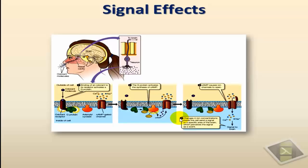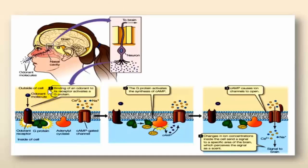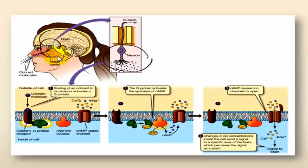The first one is opening of ion channels. We are going to give the example here of ion channels found on nerve cells — specifically nerve cells found in the roof of the nasal cavity, and how they respond to odorant molecules.